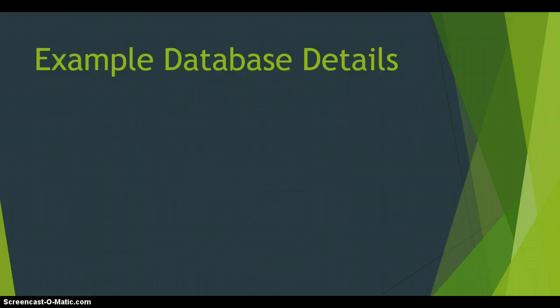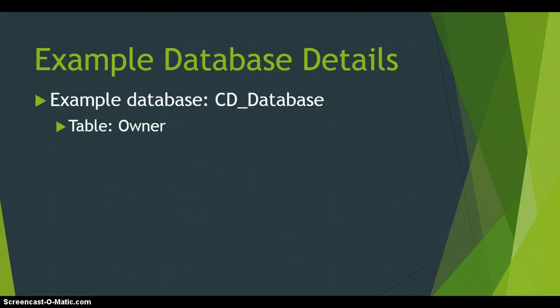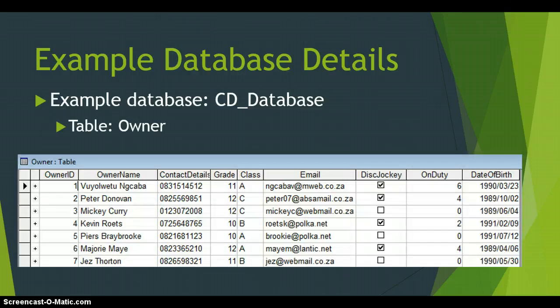The database we're using for this example is the CD database, which has an Owner table containing details about each owner. This is the only table that has a date in it — it has the date of birth on the far right-hand side of each owner record. We'll focus on that field and how to query it and extract information from it.